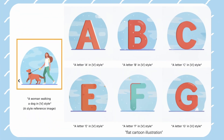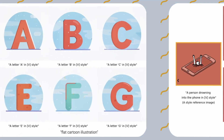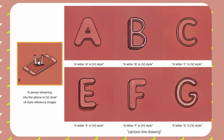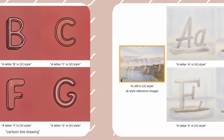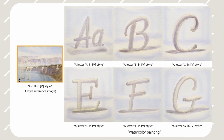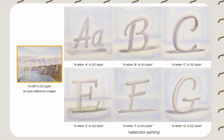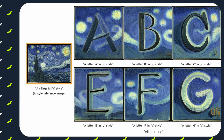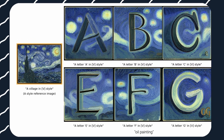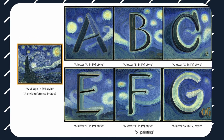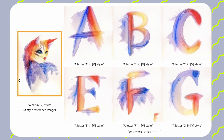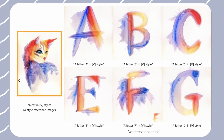Similar to text-to-image generation, Style Drop combines natural language style descriptors with content descriptors during training and generation. This enables you to synthesize alphabet characters with the desired style, resulting in interesting and varied designs.